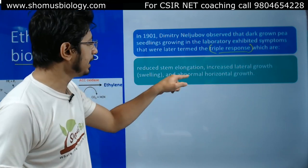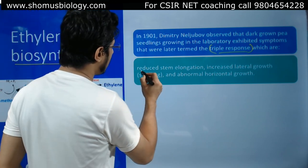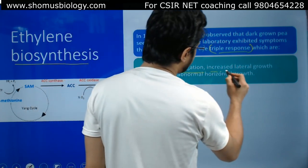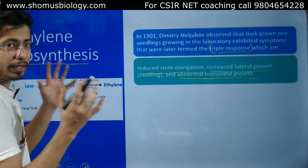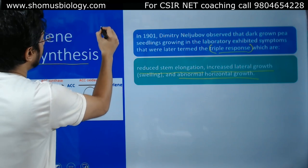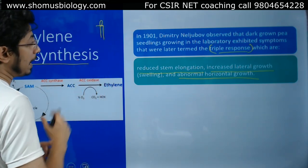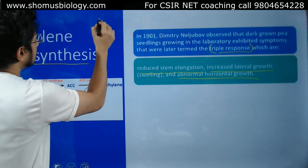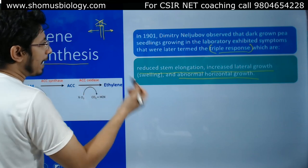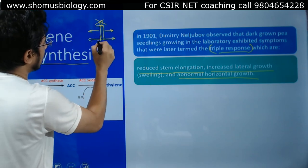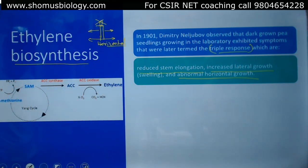The triple response involves three components: reduction in stem elongation, increased lateral growth, and abnormal horizontal growth. Normally a plant grows from the apical bud, and auxin helps in apical bud growth, but in this case we see reduction in apical bud growth, increase in lateral bud growth, and abnormal horizontal growth — that is, growth in the horizontal plane.